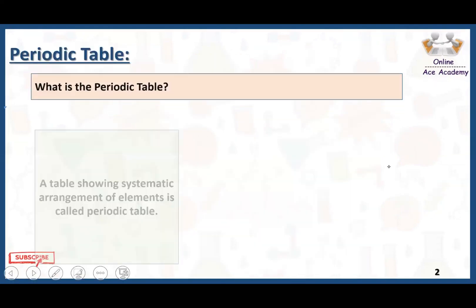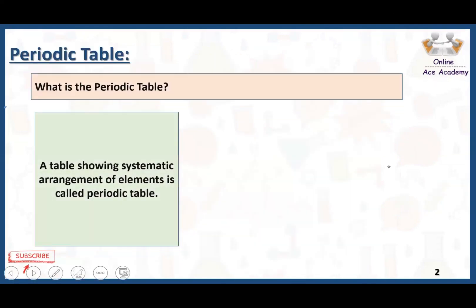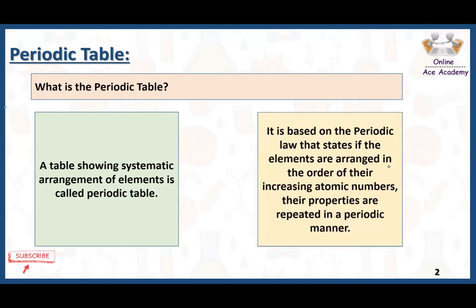A table showing the systematic arrangement of elements is called the periodic table. It is based on the periodic law. According to the periodic law, elements are arranged in order of their increasing atomic number.